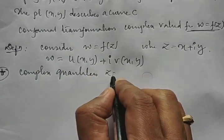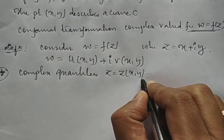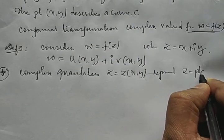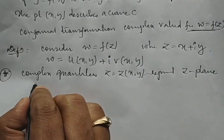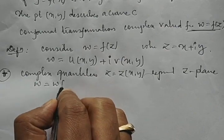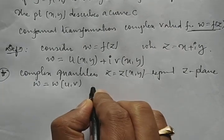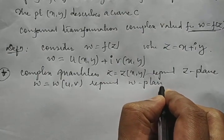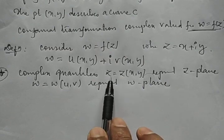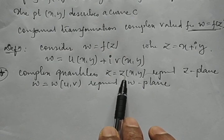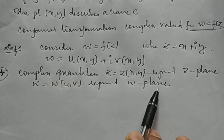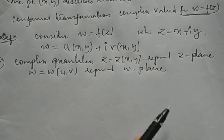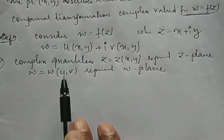The complex quantity z = z(x, y) represents the z-plane, while ω = ω(u, v) represents the ω-plane. These are two different planes: the z-plane has coordinates x and y, while the ω-plane has coordinates u and v.